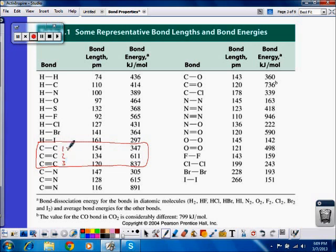So as bond order goes up, bond length goes down. So triple bonds are shorter than double bonds, which are shorter than single bonds.